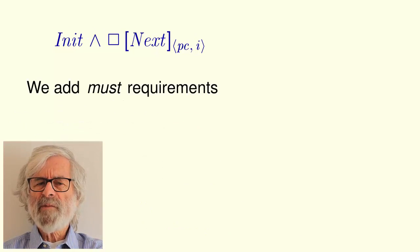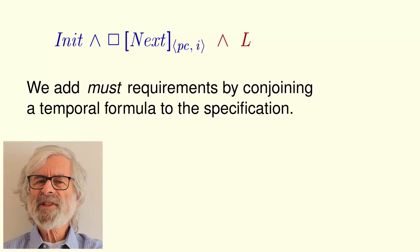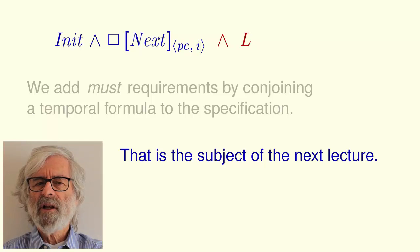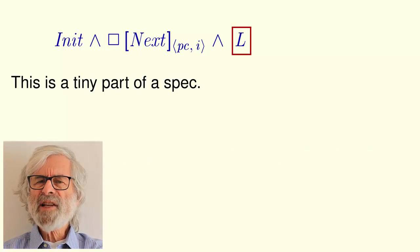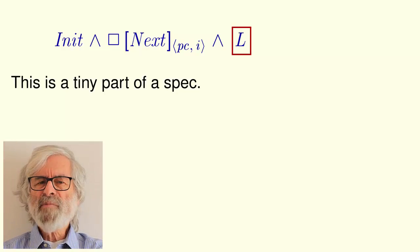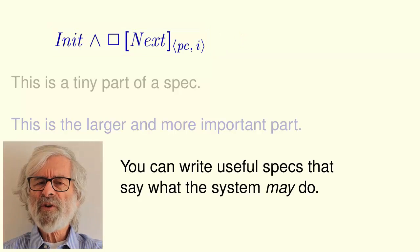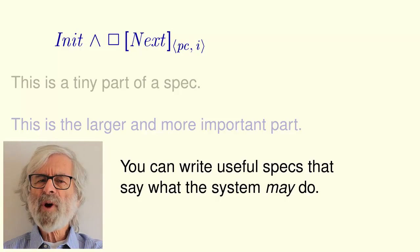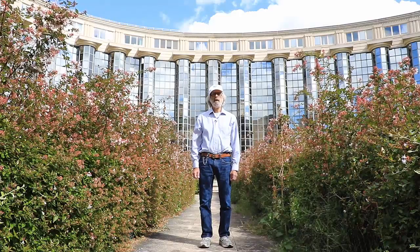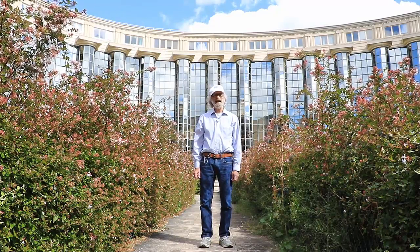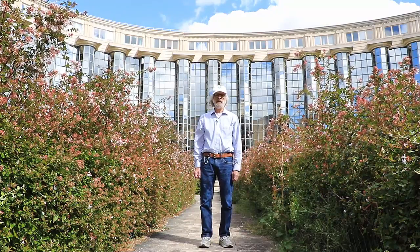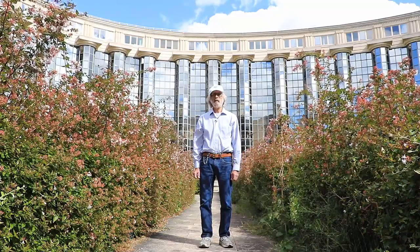We add must requirements by conjoining a temporal formula to the specification. How that is done is the main subject of the next lecture. The must formula is just a tiny part of a spec — the may formula is much larger and usually more important. With what you have learned so far, you can write specs that are quite useful even though they specify only what the system may do. You are now ready to be fruitful and specify, at least to specify what a system may do. In the next lecture, you will learn how to specify what it must do.